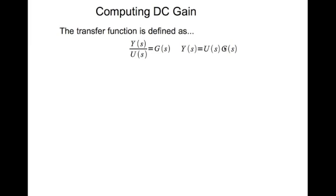Now if the input is a step, or u(t) is a step, then u(s) is one divided by s. So for step input I can write y(s) is g(s) divided by s — I've taken u(s) and substituted it with one divided by s for step input.